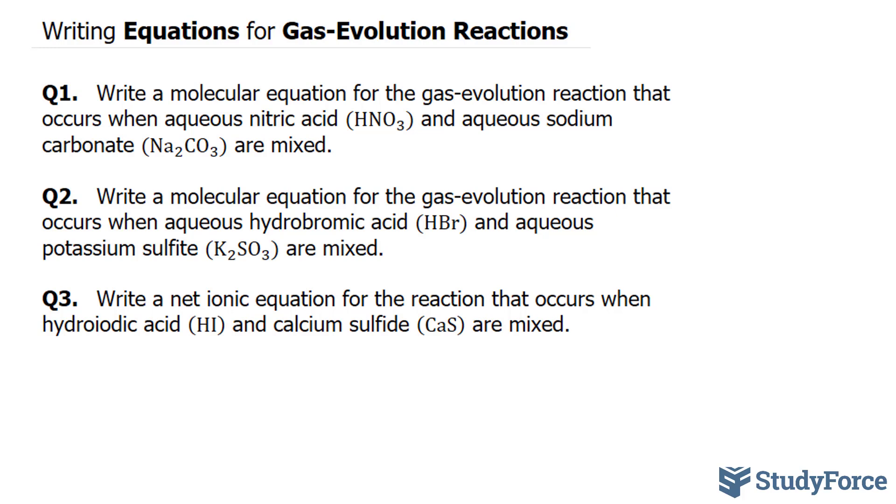The first thing that we have to do here is write an unbalanced chemical equation in which the cation of each reactant combines with the anion of the other. Let me highlight the cations. So the cation of this compound is H, and the cation here is Na+. The anion here is CO3 2-, and over here it's NO3.